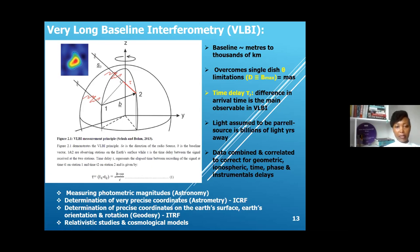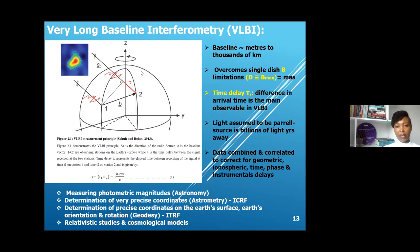As I previously said, when you talk about interferometry, the maximum baseline of an array is equivalent to the diameter of a single dish. So VLBI offers us a maximum baseline of more than 10,000 kilometers, thereby giving us very high angular resolution.